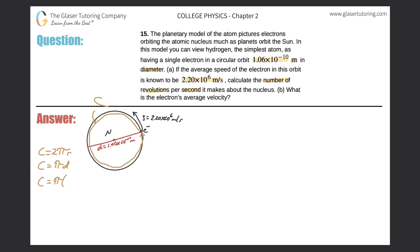So circumference is equal to pi multiplied by the diameter, and the diameter was 1.06 times 10 to the negative 10 meters. Let's plug that into the calculator: 1.06 times 10 to the minus 10 multiplied by pi. Using three significant figures, it works out to be 3.33 times 10 to the negative 10 meters. That's the circumference.